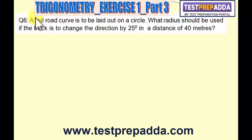The next question says a railroad curve is to be laid out on a circle. What radius should be used if the track is to change the direction by 25 degrees in a distance of 40 meters?